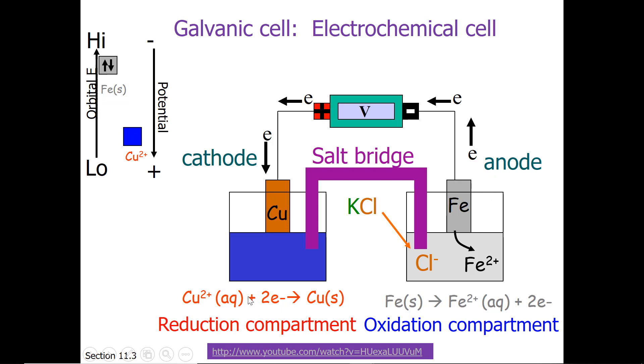If we look at what's happening in our reduction compartment, copper 2+ is becoming copper solid. We need to do something to replace that copper 2+. If we're going to take away positive charge, then our salt bridge needs to add positive charge. So the cation in the salt bridge migrates toward the cathode.